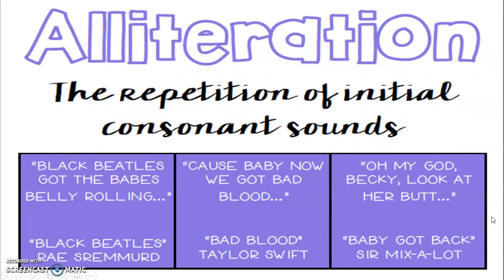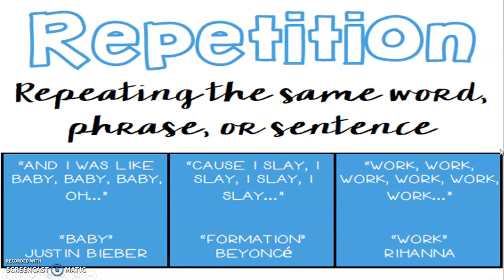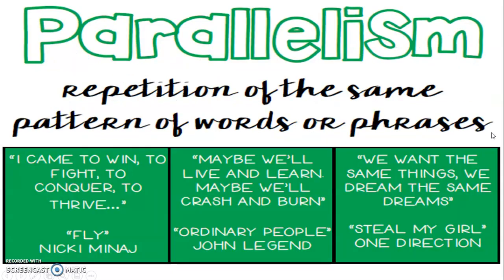First, alliteration — that's the repetition of initial consonant sounds, and there are some examples down there below. Repetition is repeating the same word, phrase, or sentence — you guys know this one and you use it all the time. Parallelism is newer but we're getting better at recognizing and using it in our writing. That's the repetition of the same pattern of words or phrases.